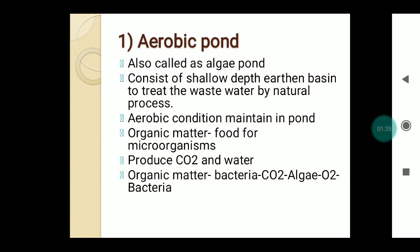The aerobic pond consists of a shallow-depth earthen basin to treat wastewater by the natural photosynthesis process. The aerobic condition is maintained: organic matter serves as food for microorganisms, which produce carbon dioxide utilized by algae for photosynthesis, producing oxygen. This oxygen is utilized by bacteria to produce new bacterial cells and CO2 in the sewage. This process is continuous, maintaining the aerobic condition in the aerobic pond.